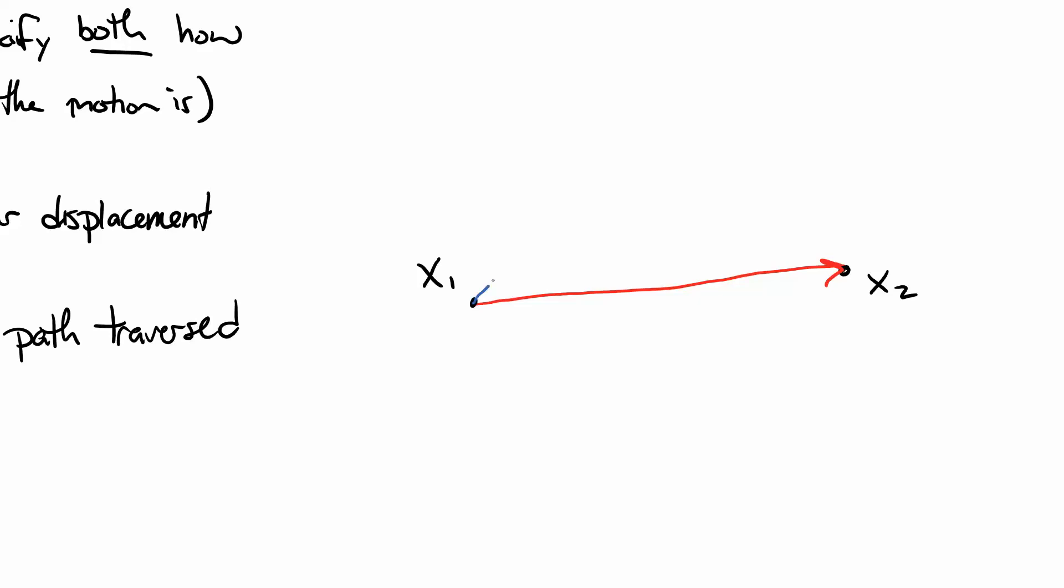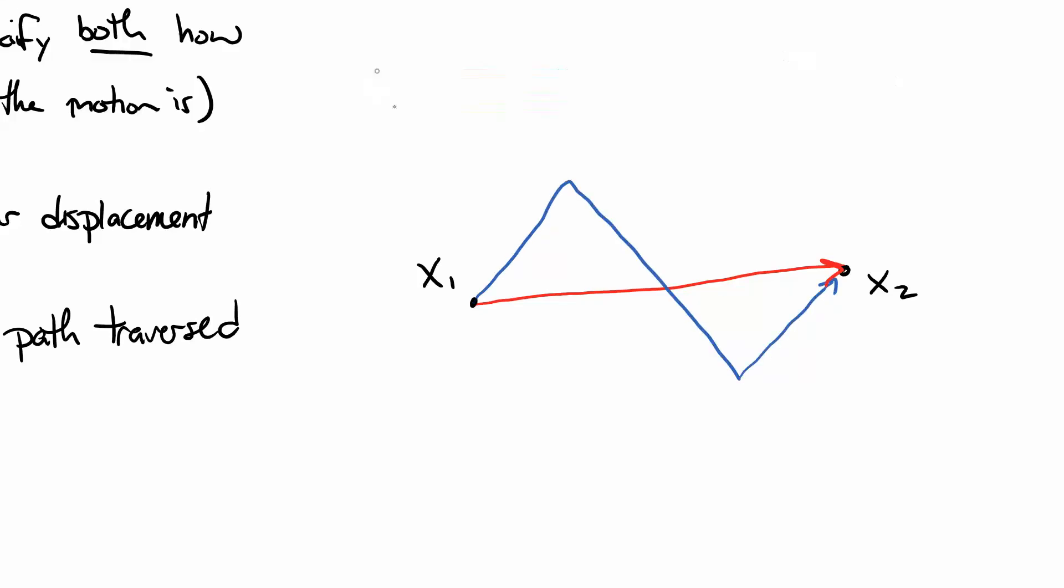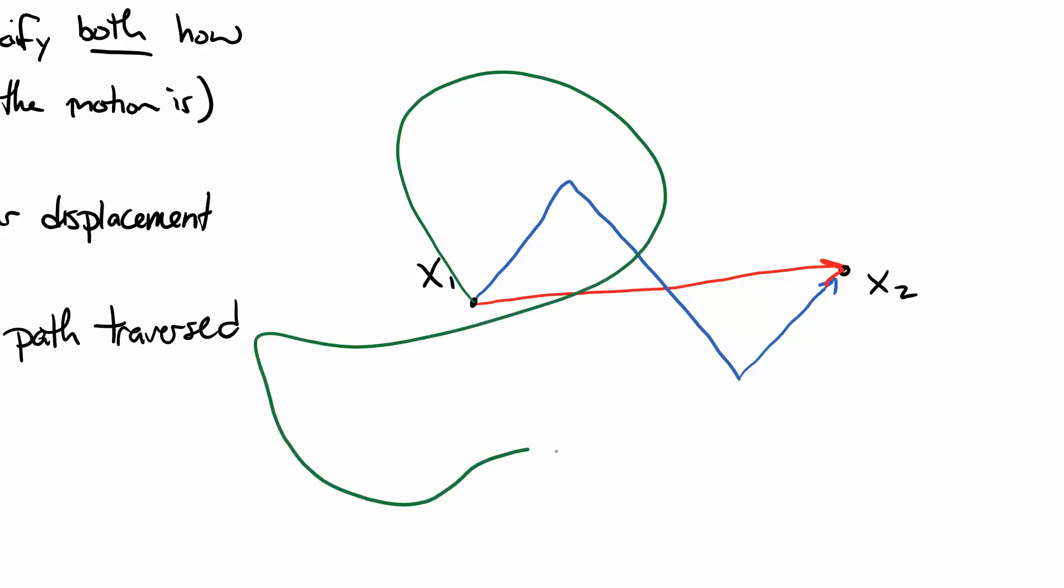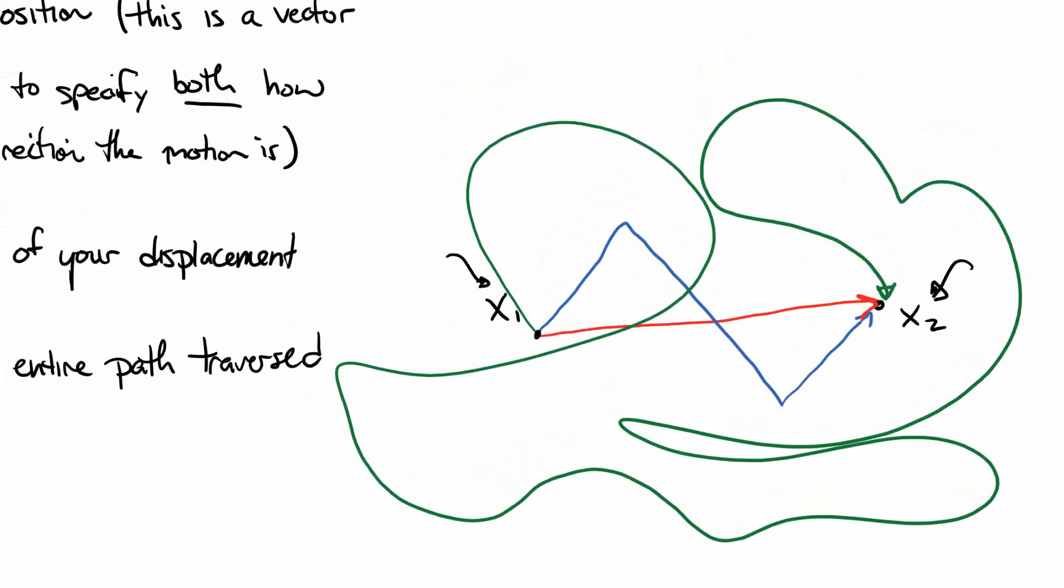Two, a straight line that kind of zigzags a bit. And then three, a straight line that probably should have learned how to use its GPS. All of these lines have the same displacement because they all start at x1 and all end at x2. So their change in position is the same. They start at the same position, they end at the same position. Their path length, however, is very different because they took different paths to get there.